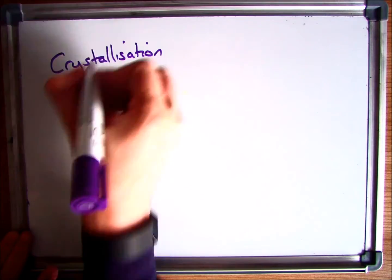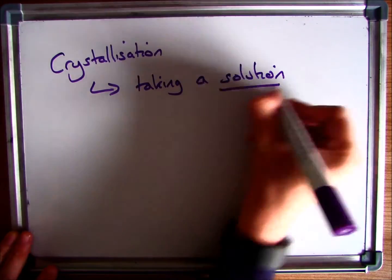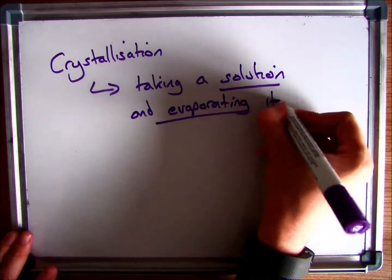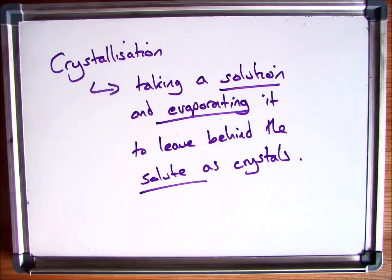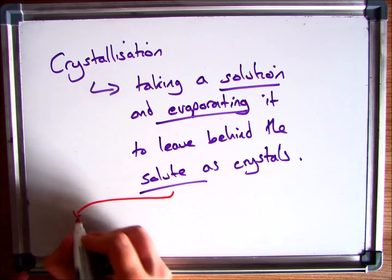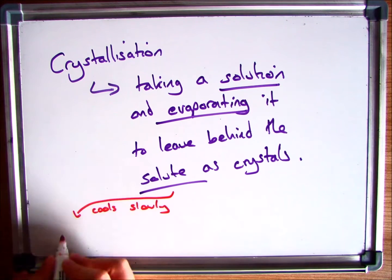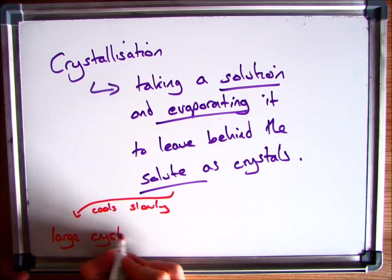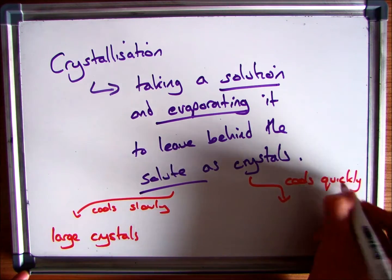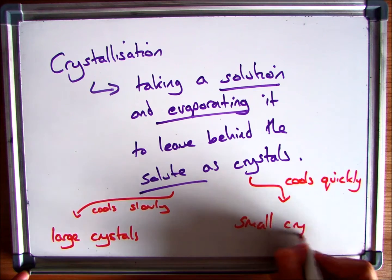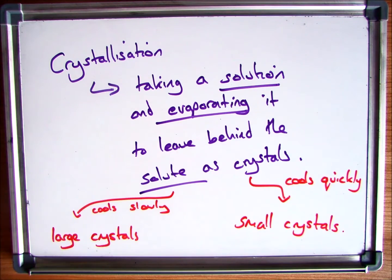The next key word is crystallisation. Basically crystallisation is where you take a solution, evaporate off the liquid and it leaves you with your solute. That solute will be in the form of crystals. Now there are two different types. If you leave it to cool over a long period of time, so it cools slowly, you're going to get large crystals. If you do it over a short period of time and cool it quickly, you'll have small crystals.